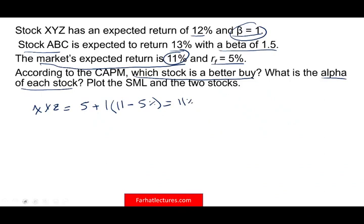Hold on a second. The expected return is 11% per CAPM. But we're saying the expected return is 12%. We should definitely buy this stock because it's going to outperform. By how much? What's the positive alpha? Positive alpha of 1%.